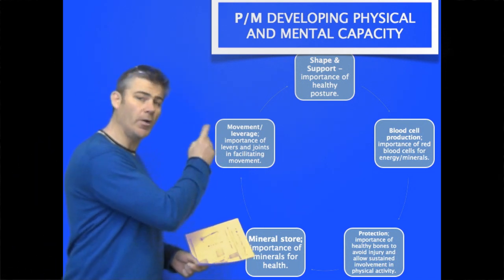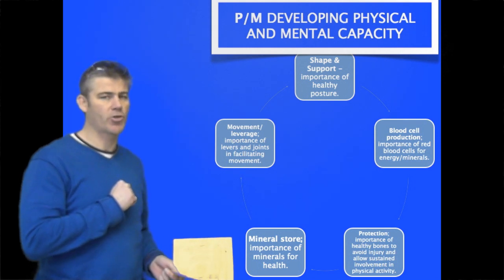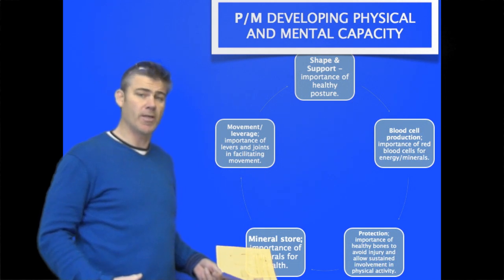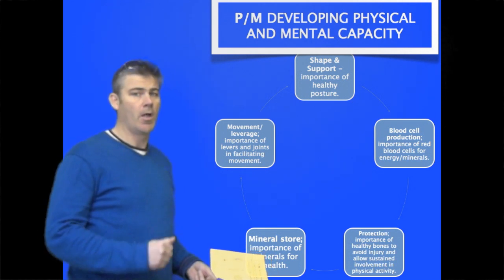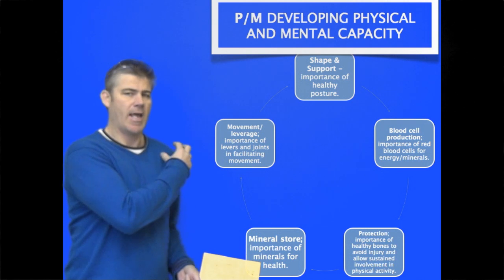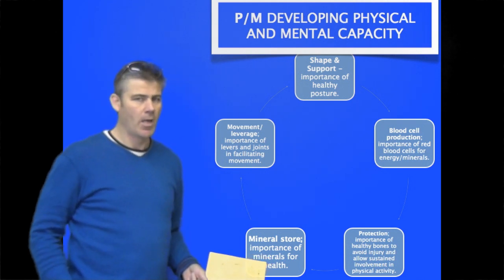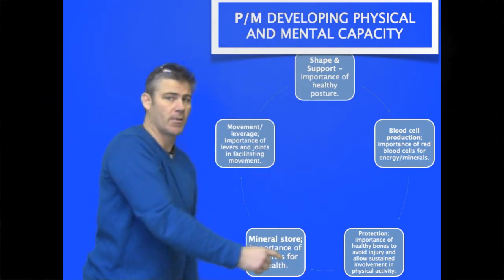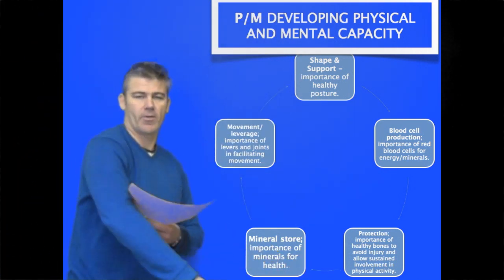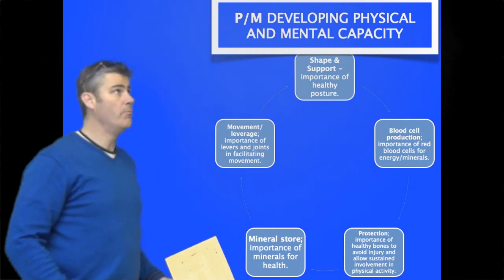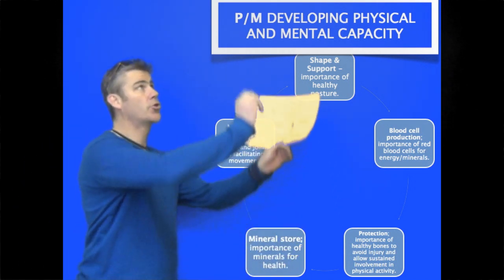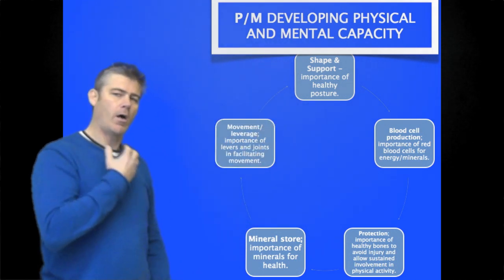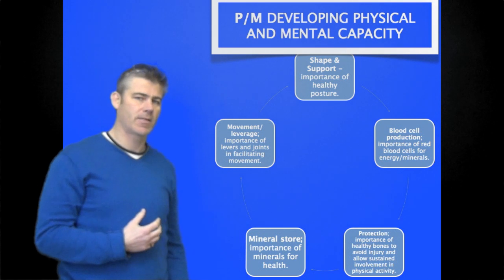The final function is movement and leverage: movement occurring in and around the different types of joints — the hinge joint in the knee or elbow, and the ball and socket joint in the shoulder and hip. For example, when bowling in cricket, the range of movement occurring for the levers, or think of a basketballer and the movement and leverage required to jump and slam dunk a ball — these all form the basis of an effective skeletal system.